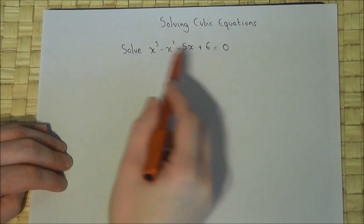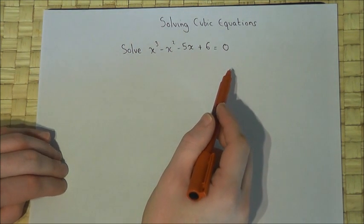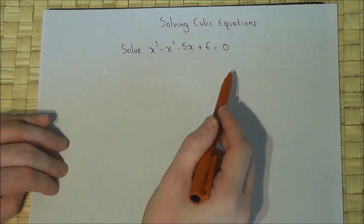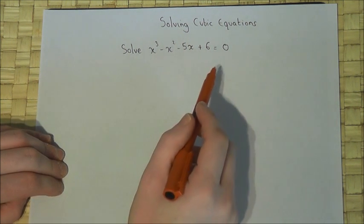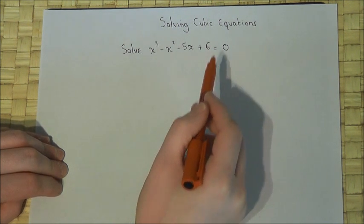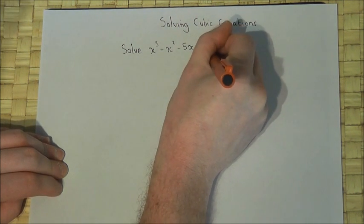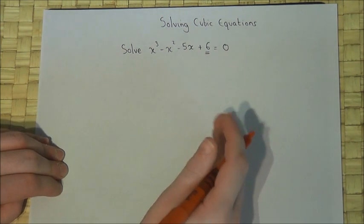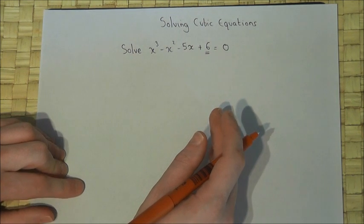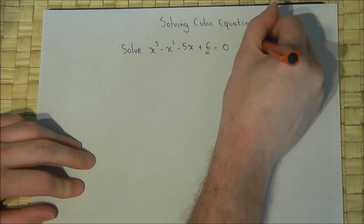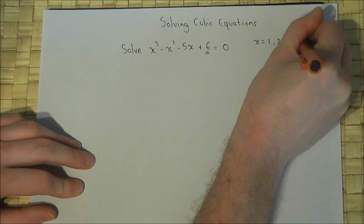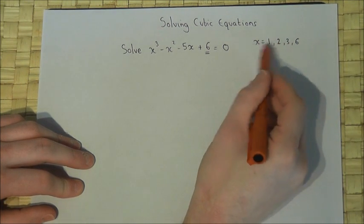Suppose we're asked to solve the cubic equation but we're not given a root. One method to approach this is as follows: if there is a whole number or integer root, then it must be a factor of the final number. So if there is a whole number root, and there's not always, then it must be one of the following: x equals 1, 2, 3, or 6. They are the factors of 6.